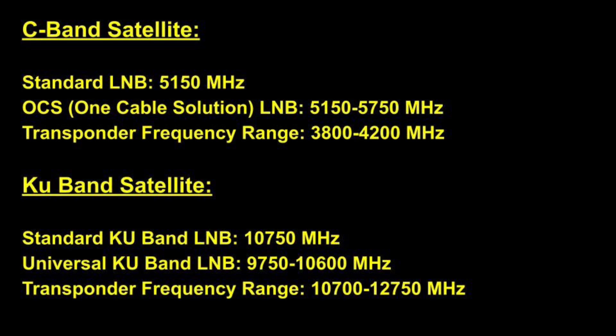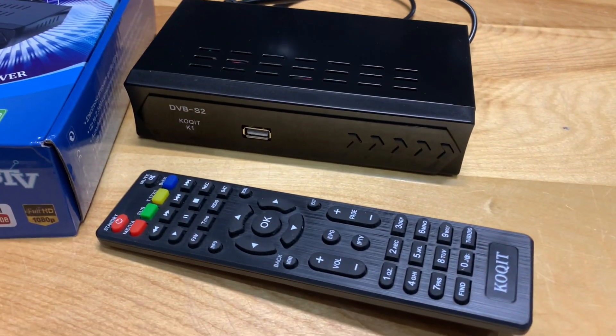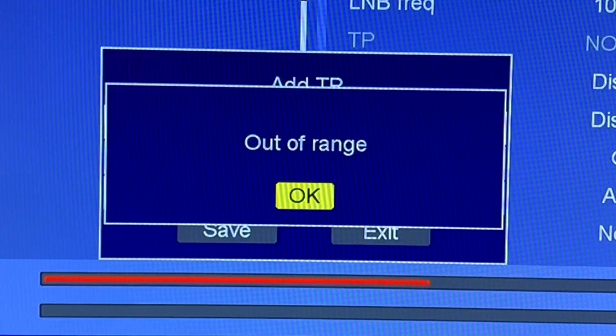This reflects the newly allotted C-band frequency range for TV after the cell phone C-band auction. For KU-band satellite, you're probably using either a standard or a universal KU-band LNB, and you'll set the local oscillating frequencies as shown on screen in your receiver. When you do that, your receiver expects the transponder frequency to be somewhere between 10,700 and 12,750 megahertz. If these things don't match in your receiver, you're probably going to get that out-of-range message.